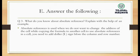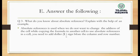Absolute cell reference is used when we want to copy a formula but the cell address should not change automatically. To use absolute cell reference, you need to add a dollar sign before the row and column — both row and column get a dollar sign, which fixes the value so it does not change.